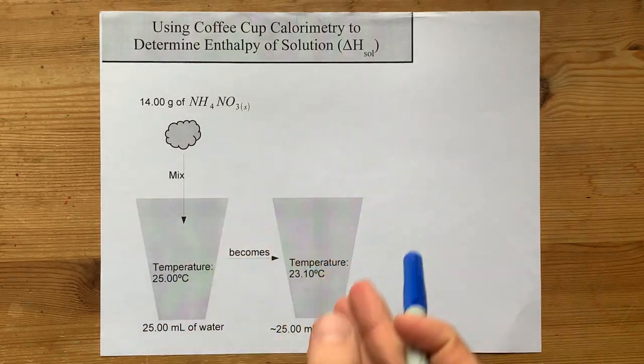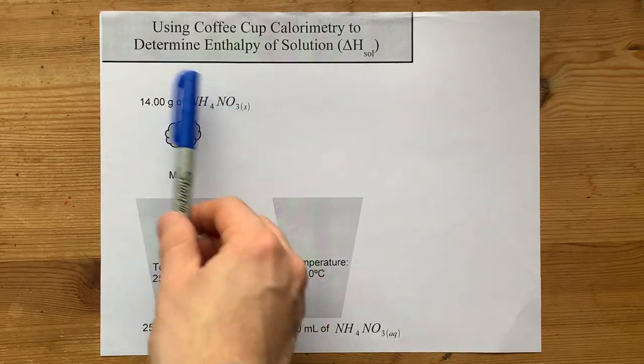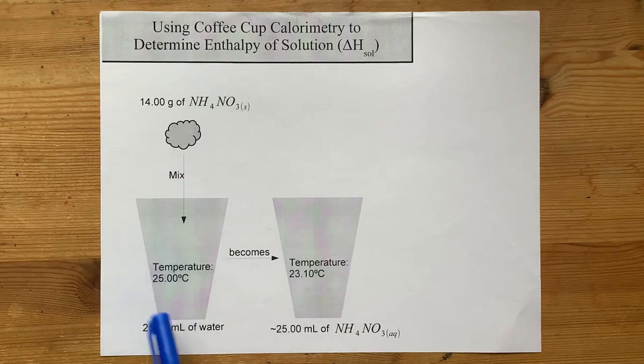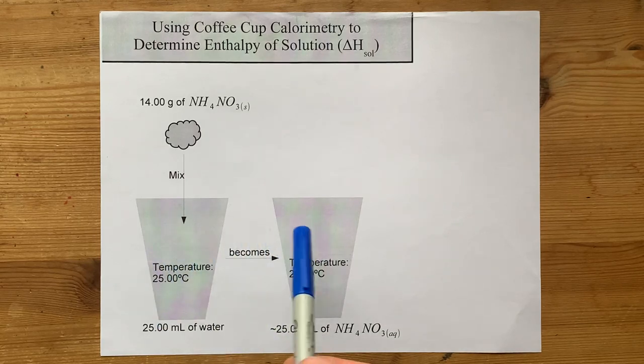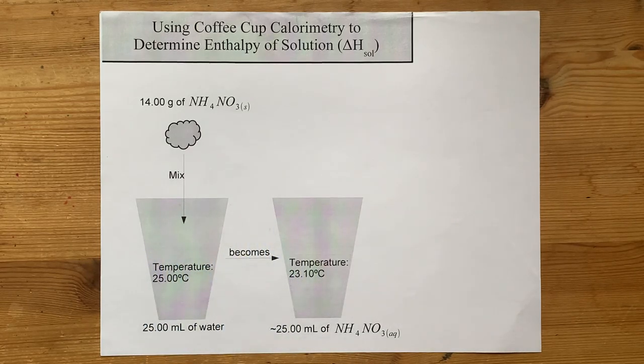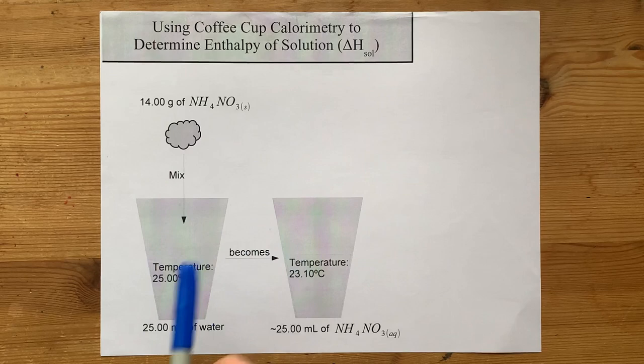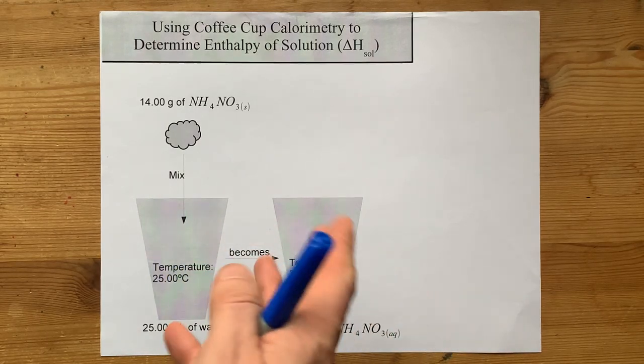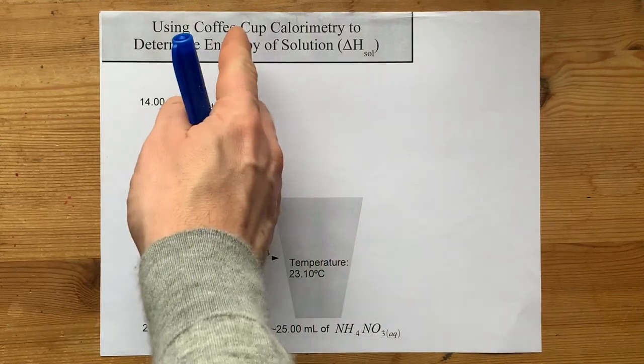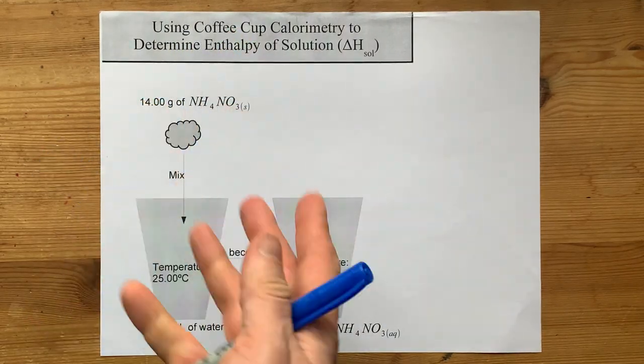One of the classic labs in high school has you mixing a solid into a known amount of water in a styrofoam cup and measuring whether the temperature goes up or down relative to where it started. Using the temperature change, you can figure out how much heat was either released or absorbed, and then you can get heat per mole or enthalpy as long as you know how much solid you dissolved.